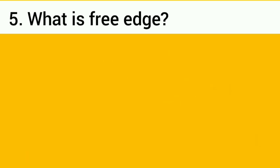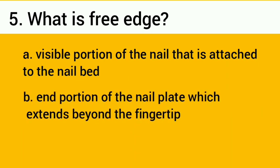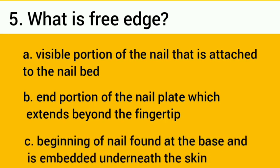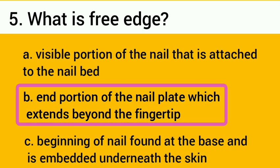Number five: what is the free edge? A, the visible portion of the nail that is attached to the nail bed; B, the end portion of the nail plate which extends beyond the fingertip; C, the beginning of the nail found at the base and is embedded underneath the skin. The correct answer is letter B: end portion of the nail plate which extends beyond the fingertip.